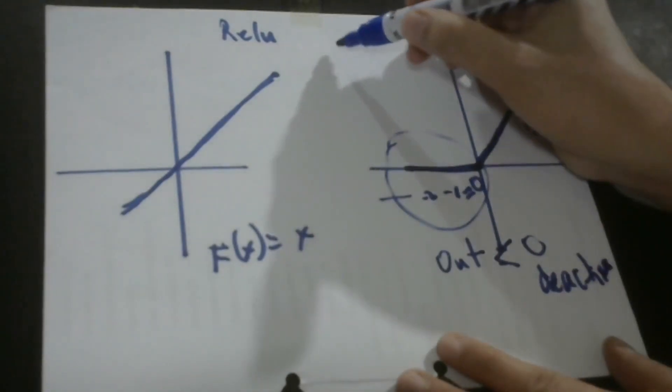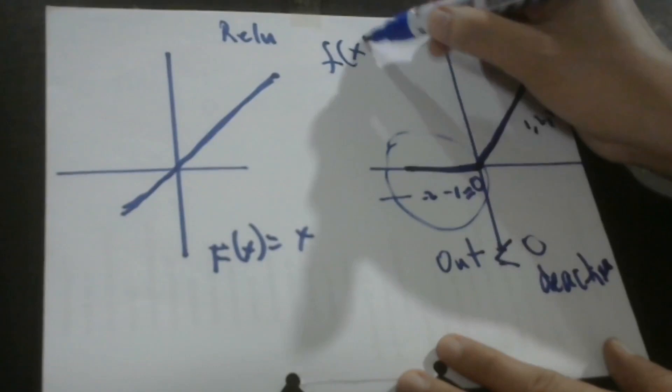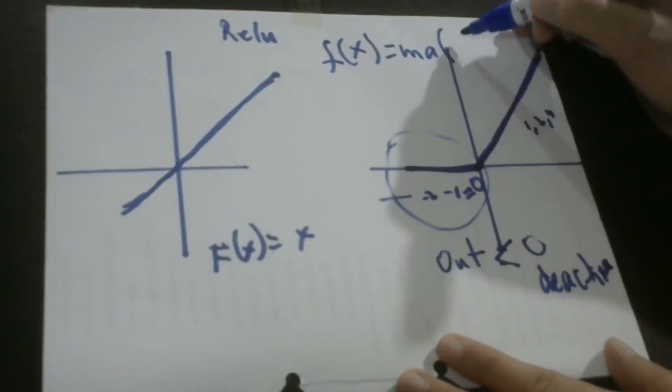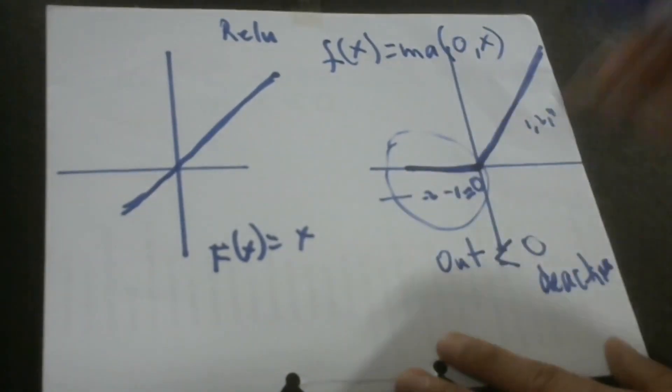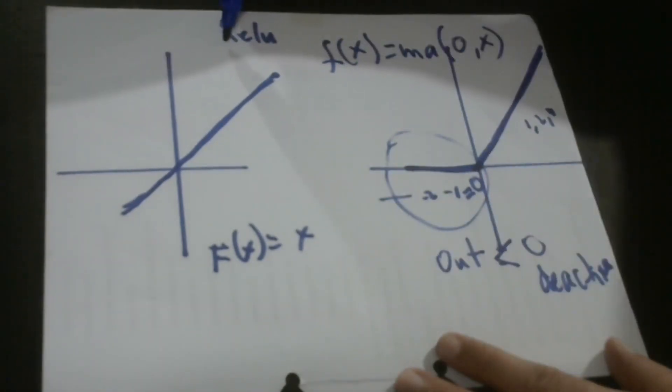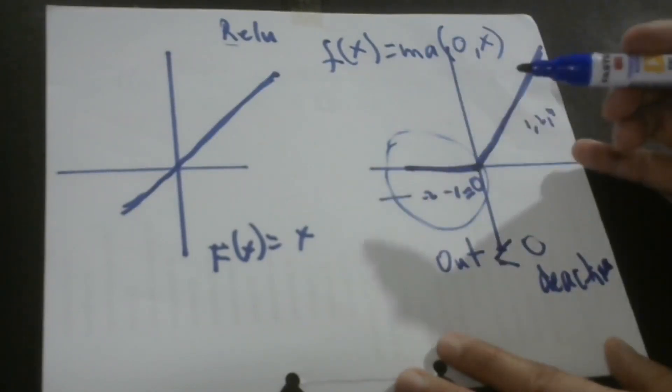So, how do we represent RELU mathematically? So, we represent RELU mathematically using this formula. The function of x is equal to the max between zero and x. So, that would bring us to the conclusion that the value of our function when we use RELU is zero or it could be one or any positive number.